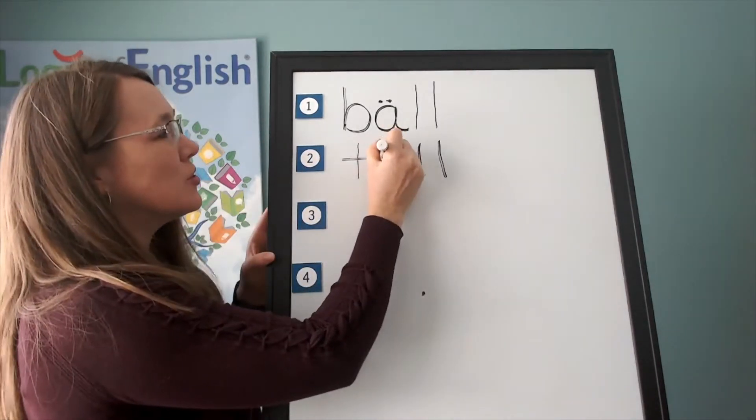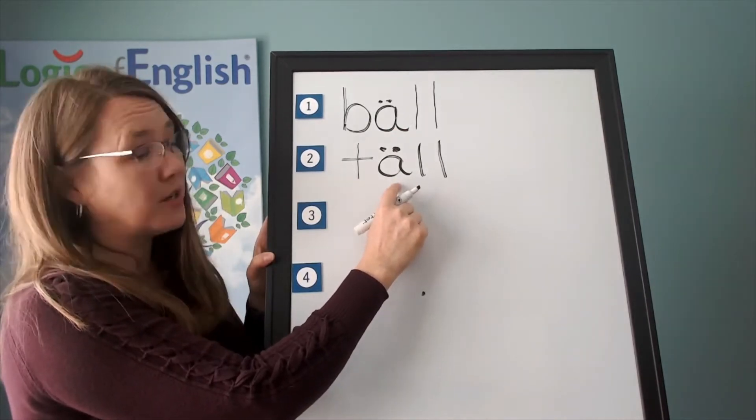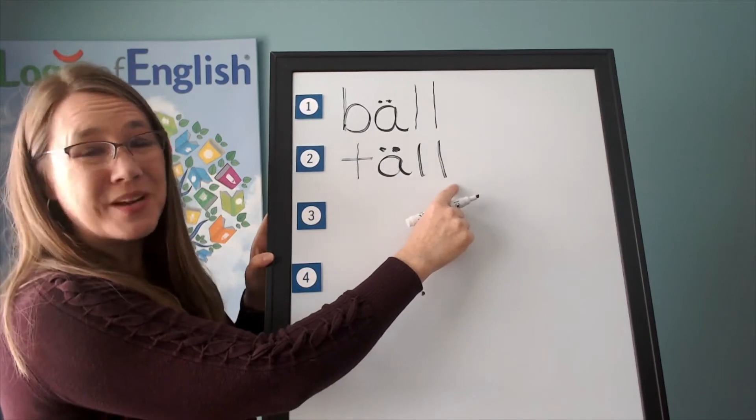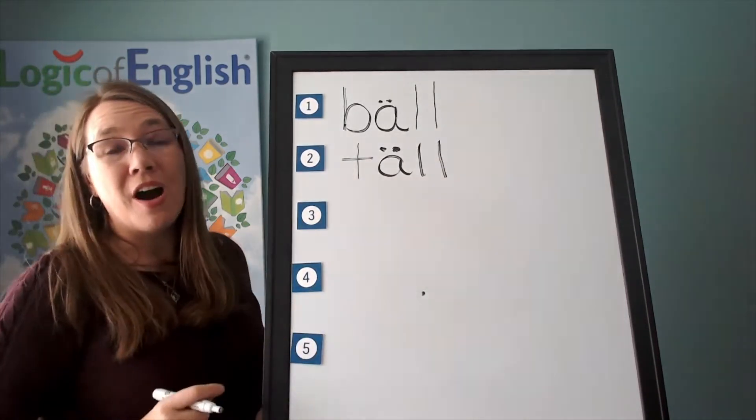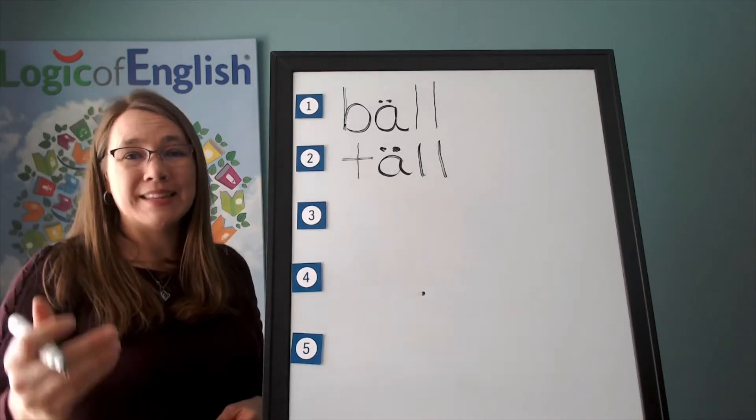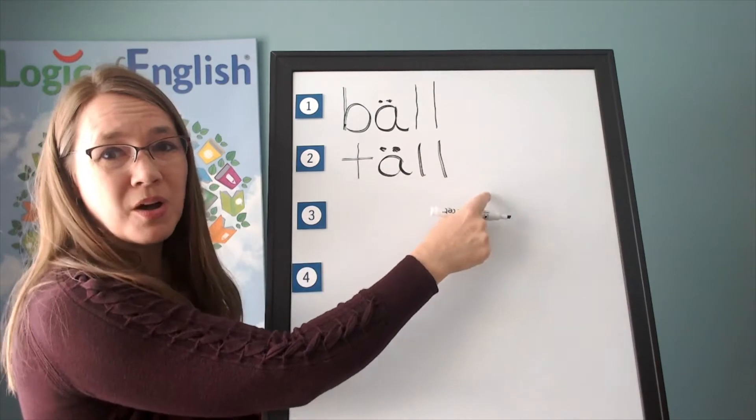How will we mark tall? Right. We'll put two dots over the broad aw sound. So A, A, aw is saying its broad sound. And what did we do here? We doubled the L. We often double F, L, or S after a single vowel at the end of a base word.